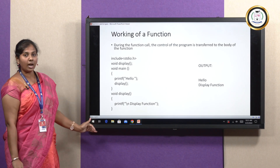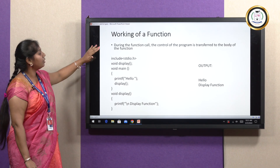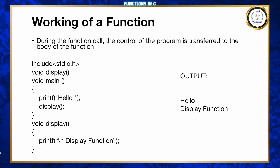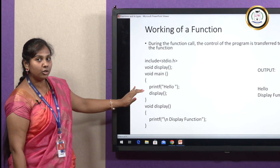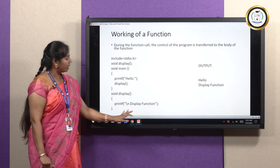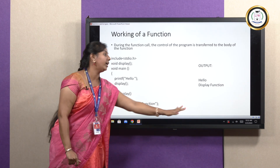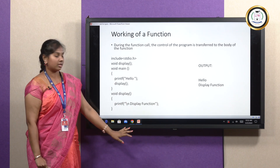After that, I have defined the user-defined function void display. Here is how the program will execute: the compiler starts from the first line, executing line by line. When control reaches printf, it prints the output and then calls the display function. The control moves to the void display function, the printf inside display is executed and shown, and then control returns back to the main function. This is how a function works.